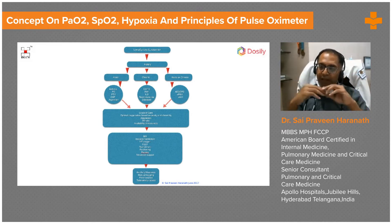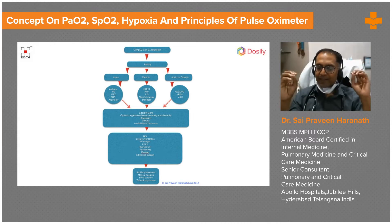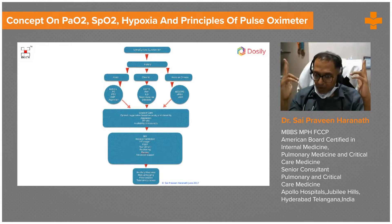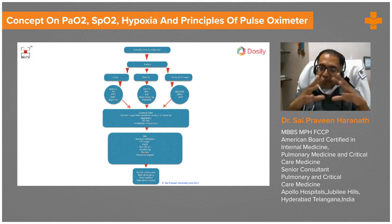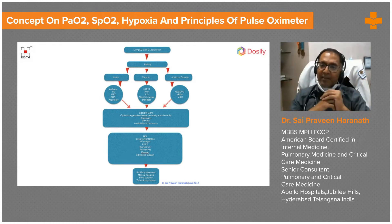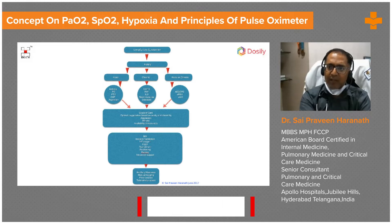That 21% oxygen is at a certain pressure depending on where you are on the surface of the earth. If you're on top of Mount Everest or in an unpressurized airplane, the pressure will be less. Imagine a column of air sitting on top of you — that is the atmospheric pressure, which is 760 millimeters of mercury.